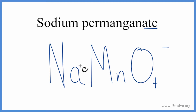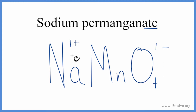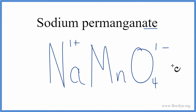When we look on the periodic table, sodium has a one plus charge, and permanganate we said was one minus. So we have a plus and a minus. This is an ionic compound, and these charges need to add up to zero to have a net charge of zero for it to be a neutral compound. One plus and one minus adds up to zero.